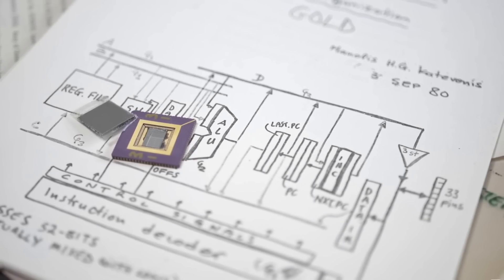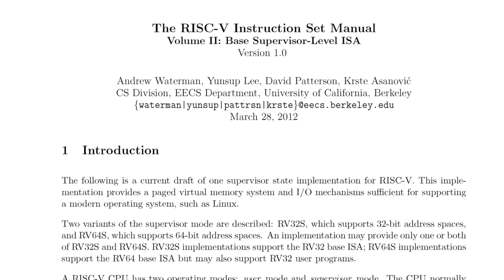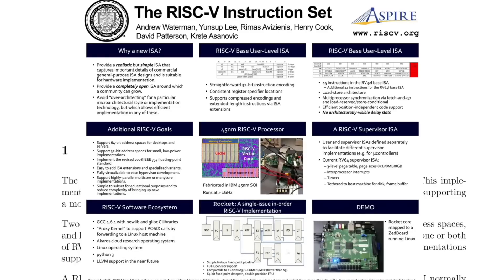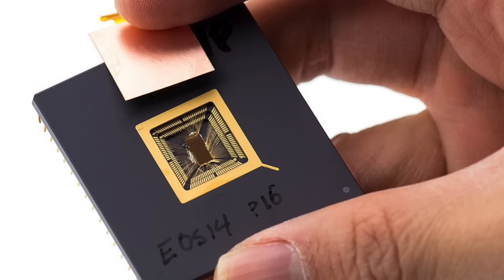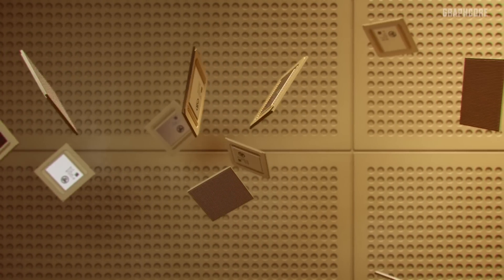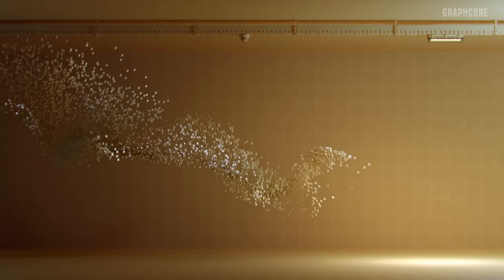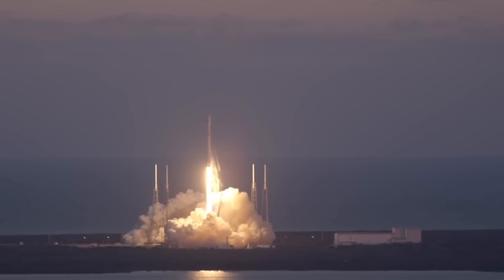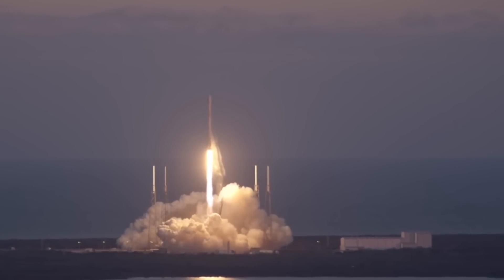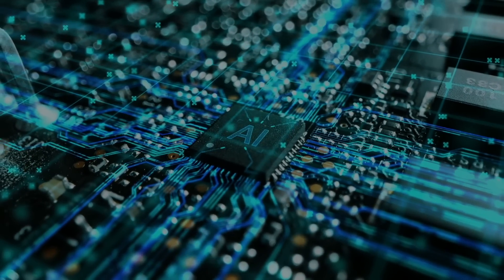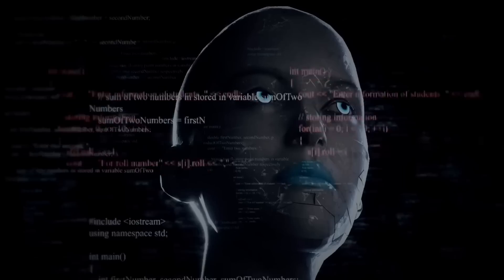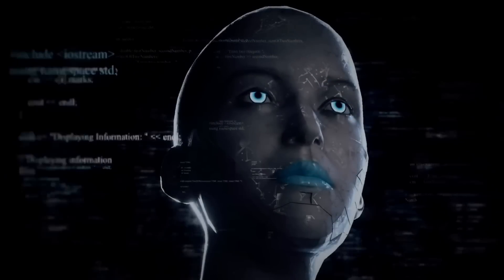RISC-V is a free, open-source instruction set architecture, which was first introduced about 10 years ago. Right now, RISC-V is taking off like a rocket, and this rocket is fueled by demand for AI and machine learning.